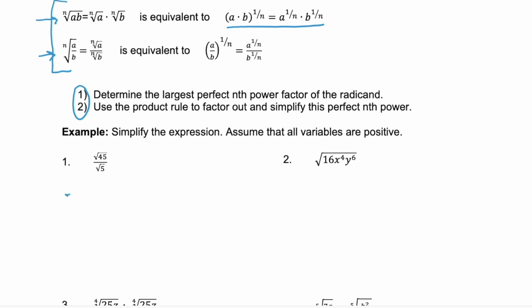But what happens if I combine them under one radical sign? I have the square root of 45 divided by 5. And 45 divided by 5 simplifies to 9. Do we know the square root of 9? Yeah, that one's easy — it's 3.